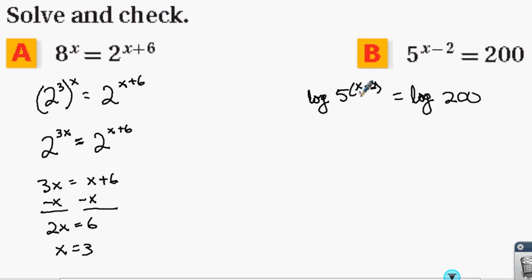Using the power theorem, I can bring that exponent out as a multiplier. So this becomes x minus 2 times log 5 equals log 200.